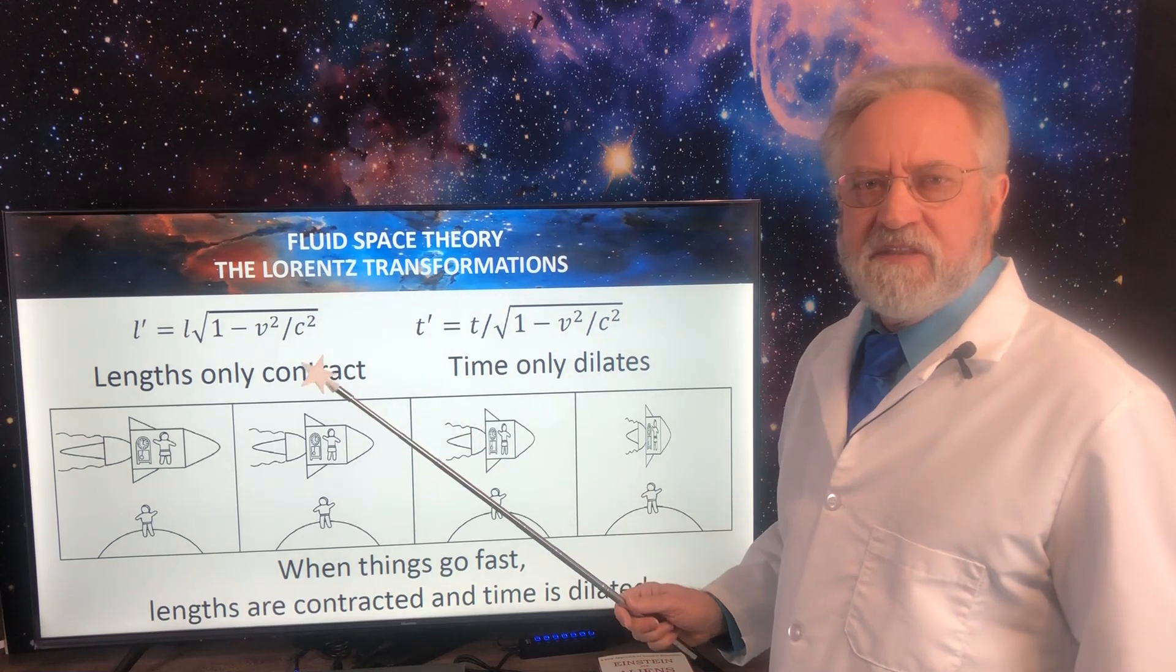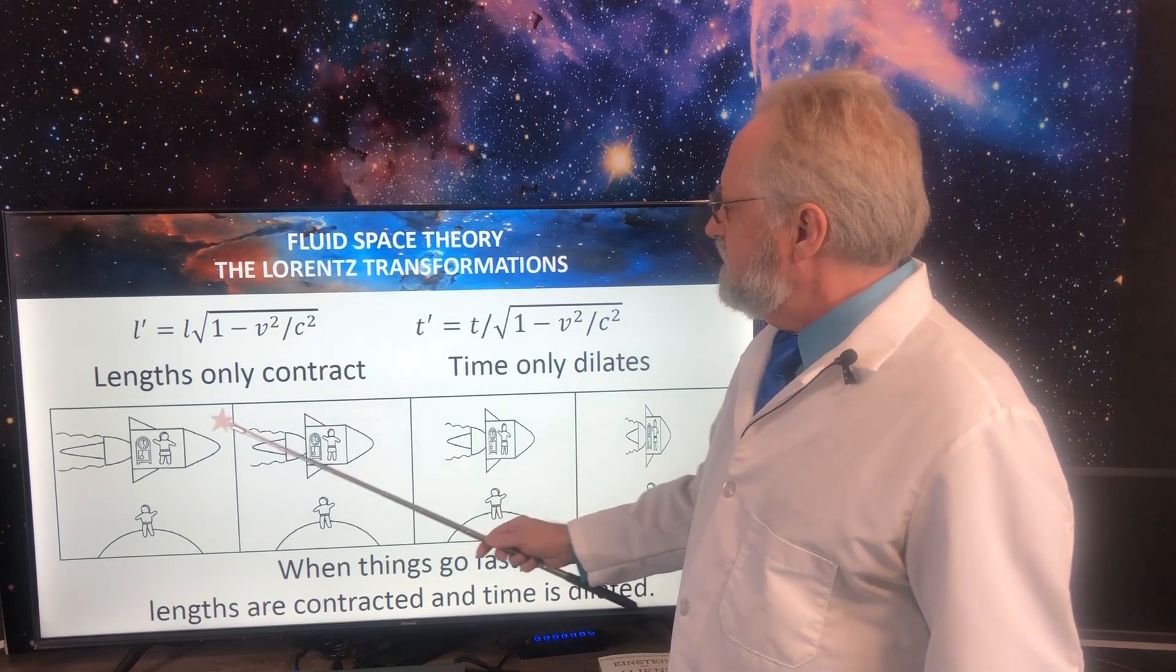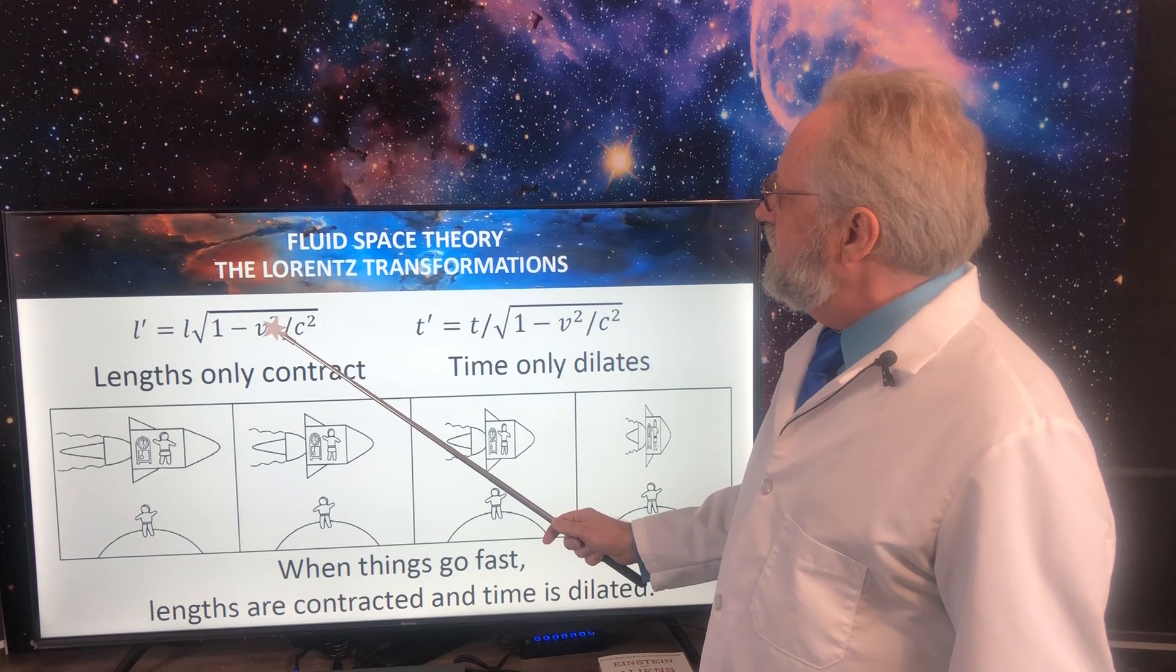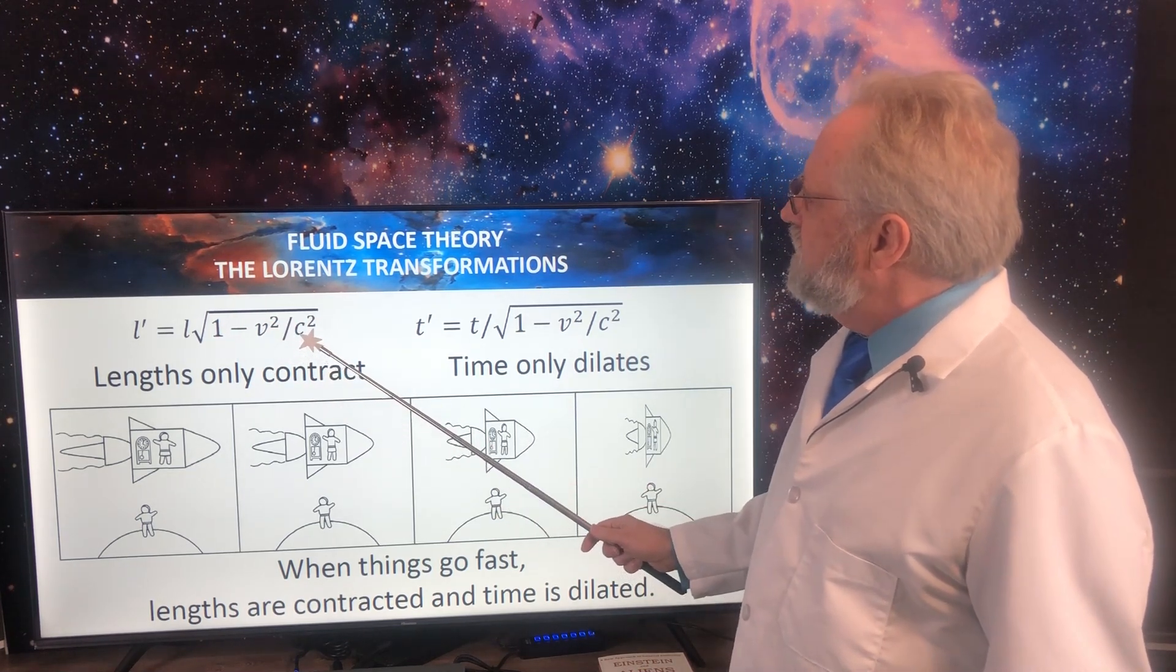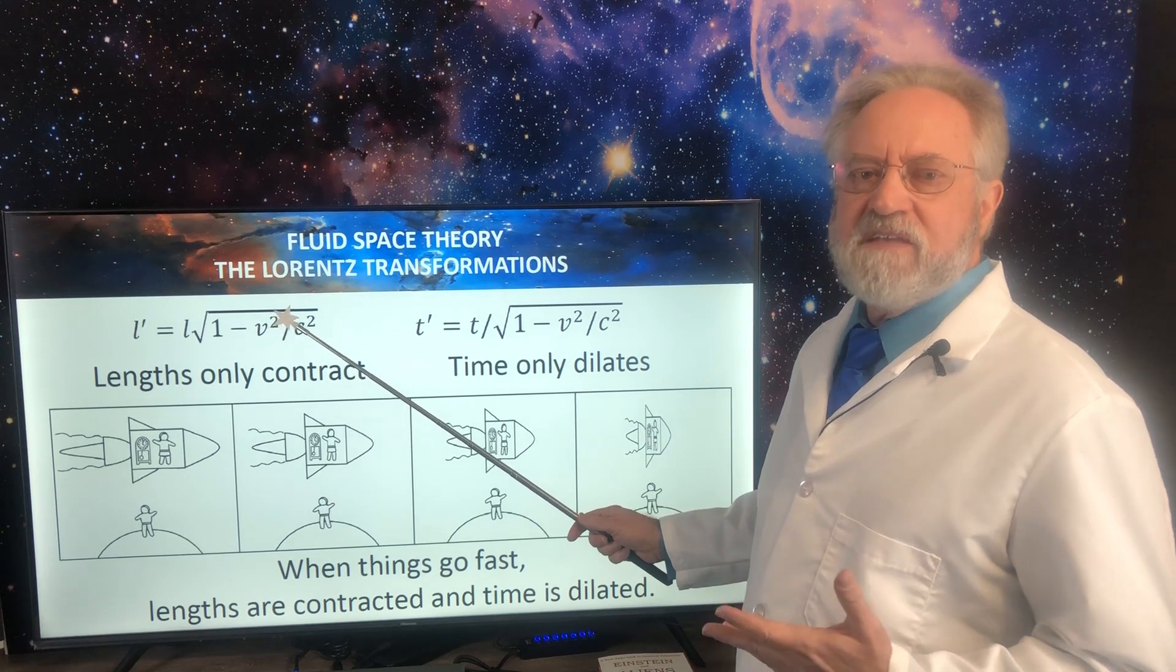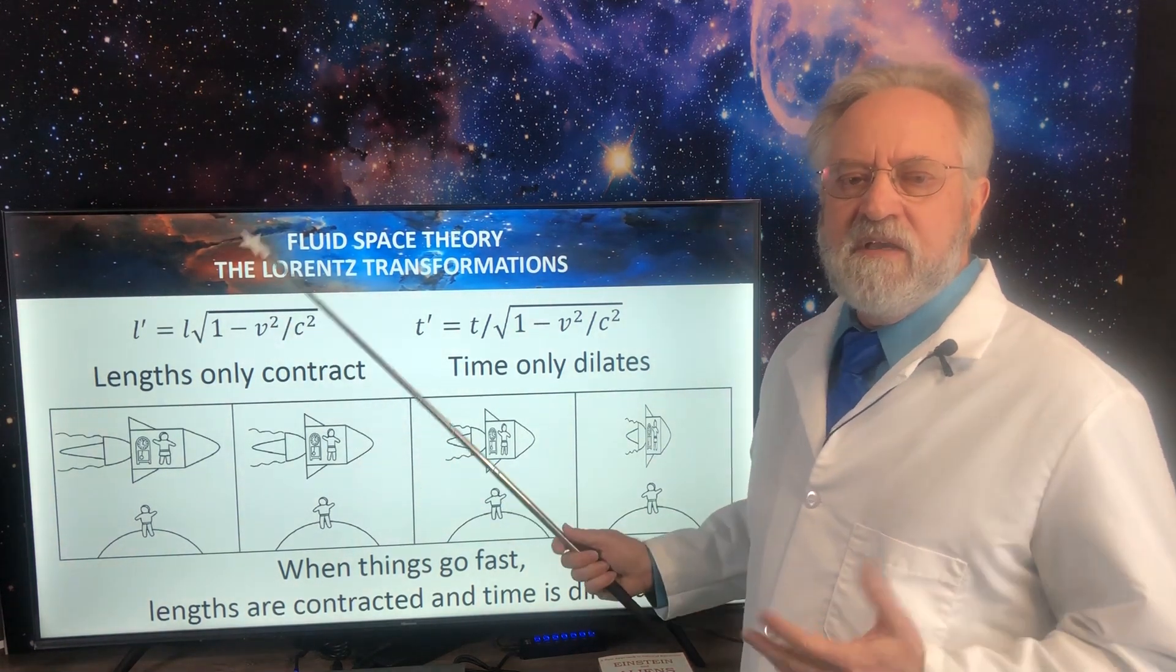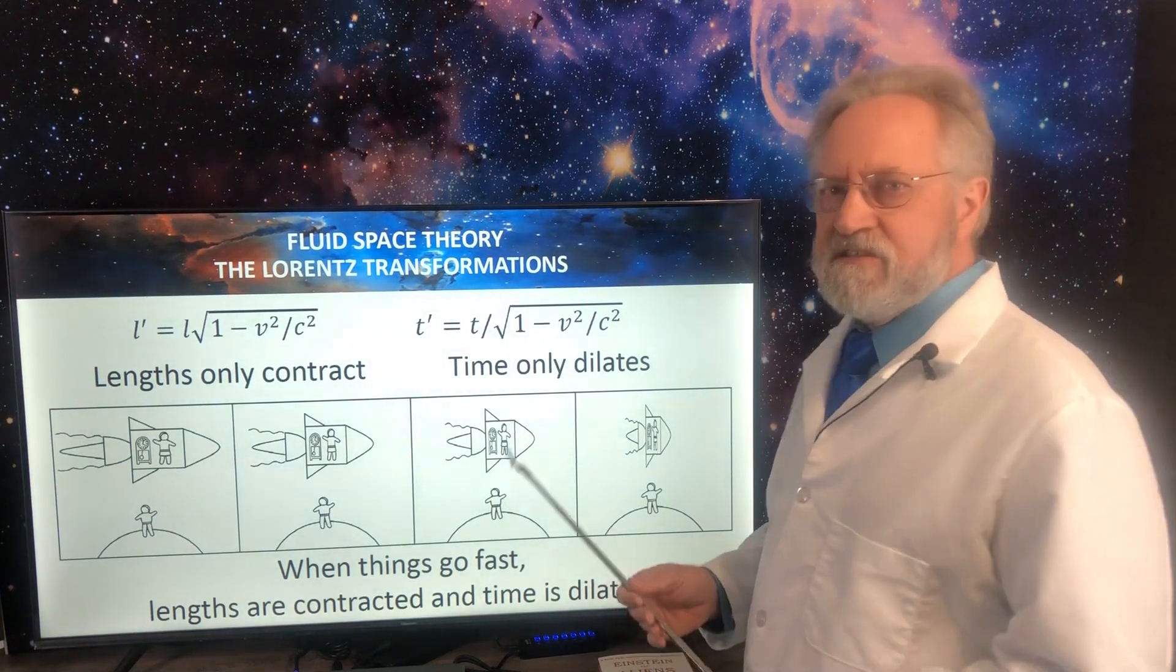So some interesting things to note about these equations. V represents the velocity, the relative velocity between Stan and the ship, and V is always going to be between 0 and C. Because if V is greater than C, then the term under the square root radical becomes negative. And then you have to deal with the square root of a negative number, which is an imaginary number or a complex number. So to get a real solution, velocity can only be between 0 and C. And this is where Einstein came up with the fact that nothing can exceed the speed of light. And that does seem to be true.